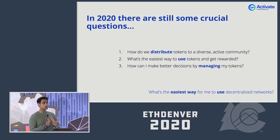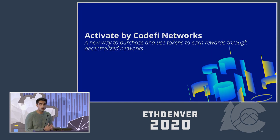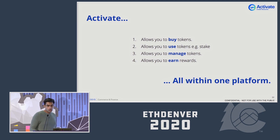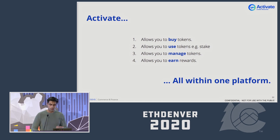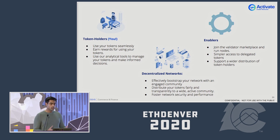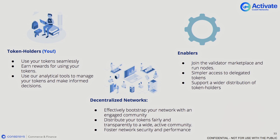We were very proud to announce recently the launch of a product called Activate, which is a novel way to purchase and use your tokens to earn rewards through decentralized networks. On Activate, you can buy tokens, use them, manage them, and earn your rewards from interactions all within one simple platform. There are three main stakeholders. The first is token holders — the majority of users — who are able to seamlessly use their tokens within a few simple clicks through easy-to-manage interfaces. They understand the effects of earning rewards for using their tokens, and we provide analytical tools to help them digest the gravity of the decisions they're making.